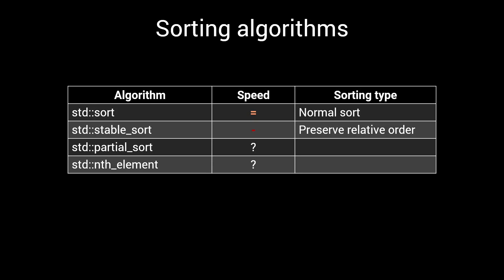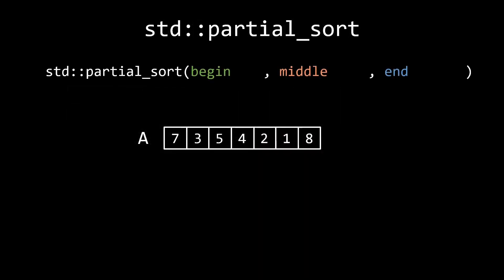But what if you don't need every element to be sorted? Maybe you are only interested in the top 3 from a big list of elements. This is where partial sort comes in. Partial sort takes 3 iterators as input, a begin, a middle and an end iterator.